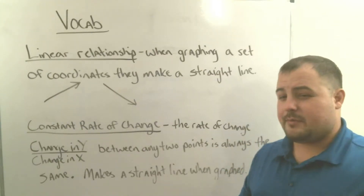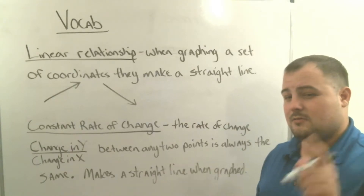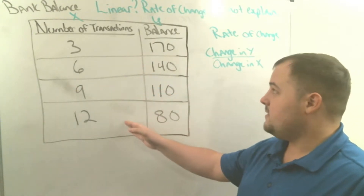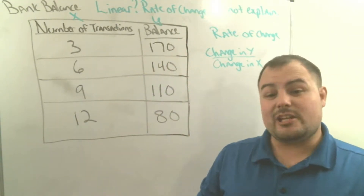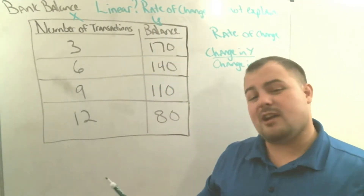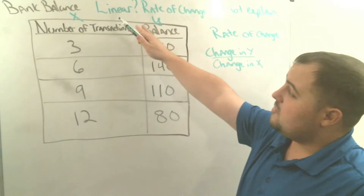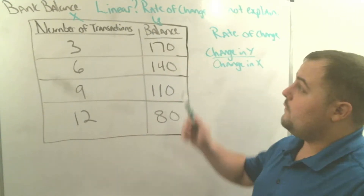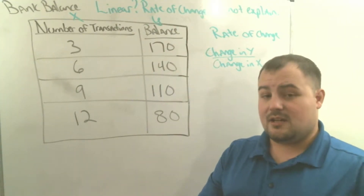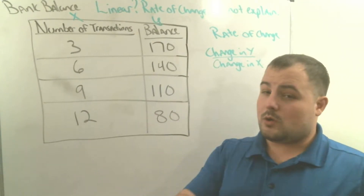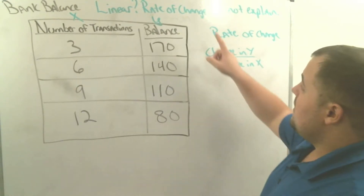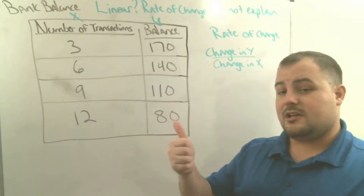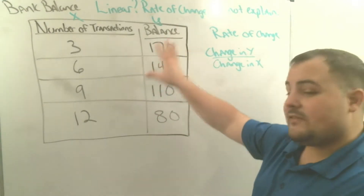There are two more pieces to talk about: proportional and non-proportional relationships when it comes to making lines. In our first example, we're going to determine from a table whether a bank account balance based on the number of transactions is linear or non-linear. We can determine this without even graphing. First, we determine if it's linear — it must have a constant rate of change. The word constant in mathematics means it always has to be the same. If it's not linear, we need to explain why.